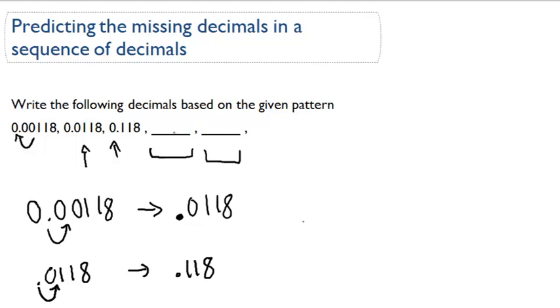So the next iteration, the next number right here, it would really be 0.118. And I'd move the decimal point over one place. That's the pattern. So I'm going to have 1.18.